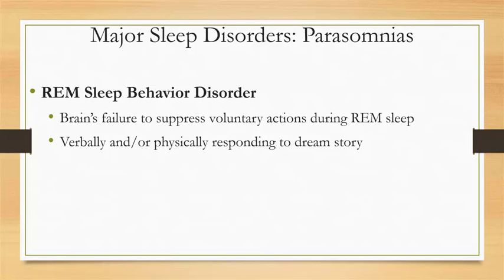The last disorder I'd like to talk about is REM sleep behavior disorder. All other parasomnias discussed thus far emerged during non-REM stages 3 and 4. In contrast, REM sleep behavior disorder represents a failure of the brain mechanisms that normally suppress voluntary actions during REM sleep. As a result, the person verbally and physically responds to the unfolding dream story, which they do remember in vivid detail when they awake. The enacted dream story usually revolves around intense fear in response to being threatened or attacked by unfamiliar animals or people. In the dream, the person defensively fights back or tries to escape.